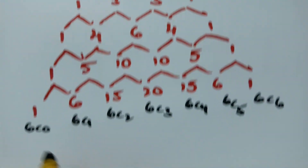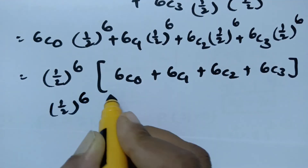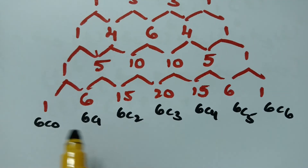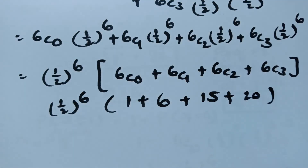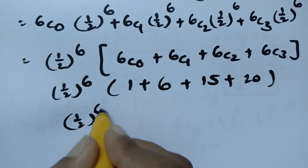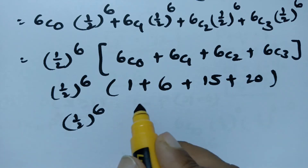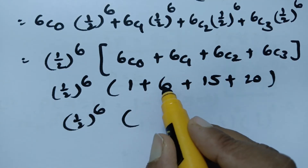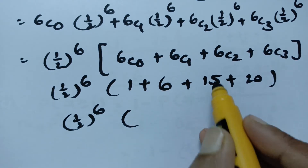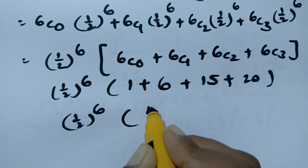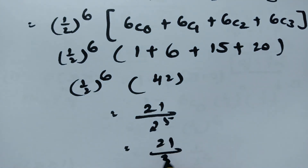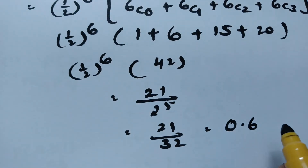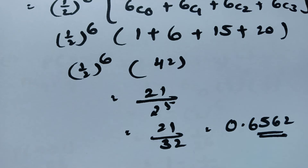So 6C0 = 1, 6C1 = 6, 6C2 = 15, and 6C3 = 20. Adding these: 1 + 6 + 15 + 20 = 42. Then 42 × (1/2)^6 = 42/64 = 21/32, which equals 0.6562.